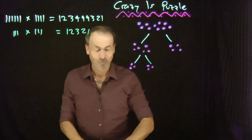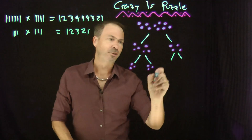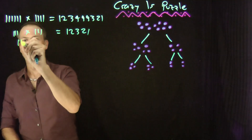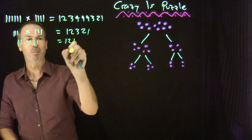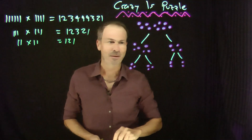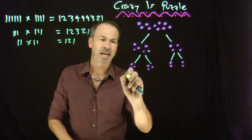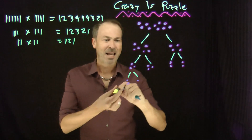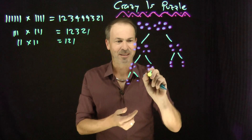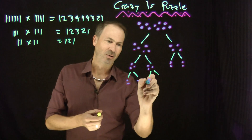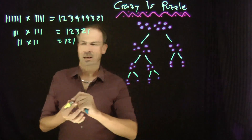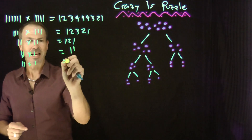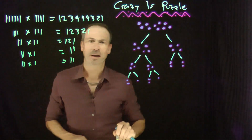Keep going. For example, this 4 you might want to split into 2 and 2. So 11 times 11 is 121. That 3 could split into say a 2 and a 1, and that other 3 can also split into a 2 and a 1. I'll do those simultaneously. 11 times 1, 11 times 1.